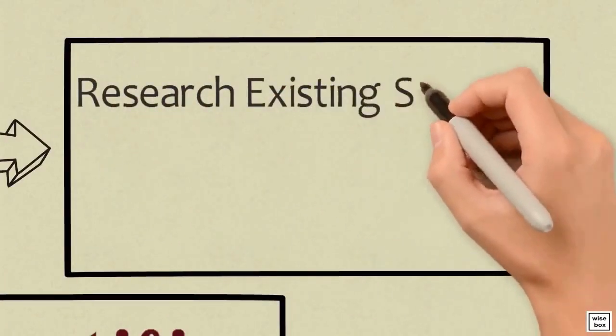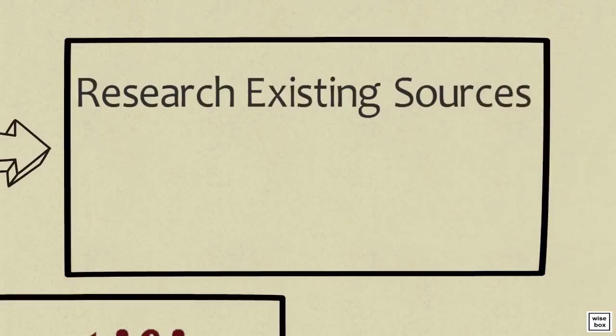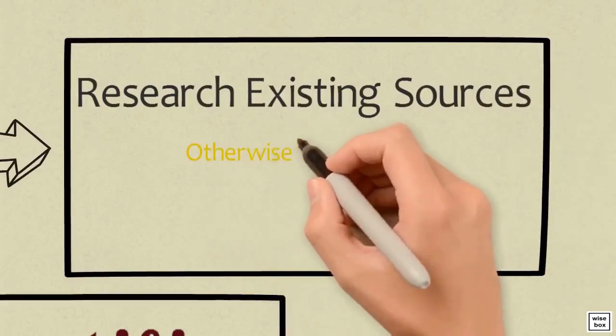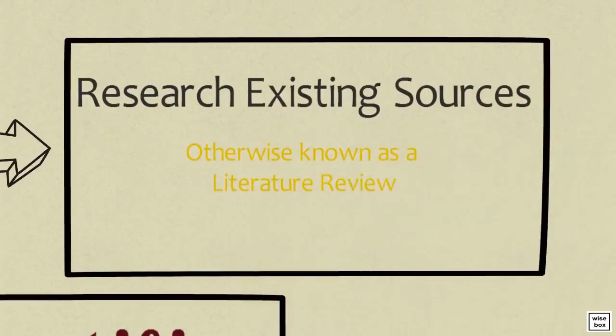Next, you need to research existing sources. This step is otherwise known as a literature review. Researching existing studies helps a researcher understand their own topic better and to build a study that would add to their research already conducted.